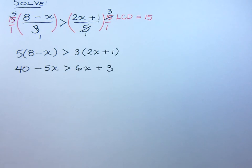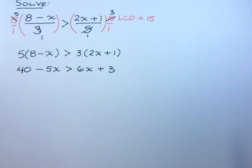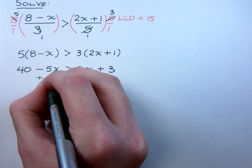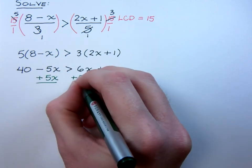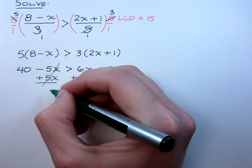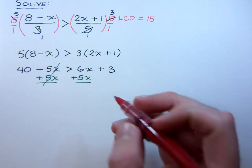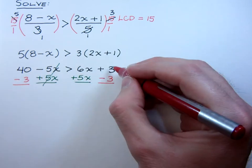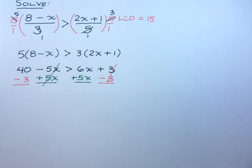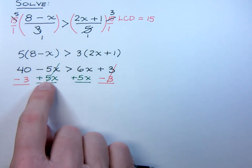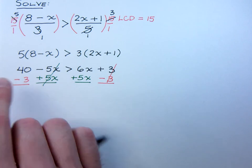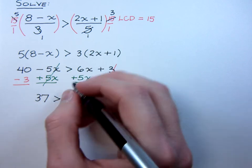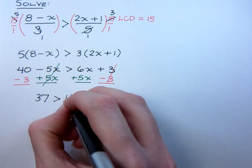Alright, well now it's just a matter of get your variables to one side, constants to the other. Now if it's me, I really like my coefficients to be positive. So I'm going to add the 5x to both sides of the inequality. So that's going to cancel. And you know what, while we're doing this, let's go ahead and move the constants to the left by subtracting 3 from both sides. We did stuff like this when we were solving equations where we went ahead and moved the variables and the constants in the same step. So now we have just 37 greater than 6x and 5x gives us 11x.